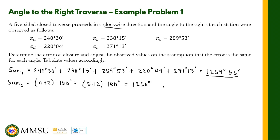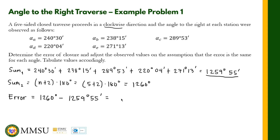As you can see, Sum 1 and Sum 2 are not the same, which means we have an error of closure. The error is the difference between Sum 1 and Sum 2. We compute: 1260 degrees minus 1259 degrees 55 minutes, giving a positive error of 0 degrees 05 minutes. This error of closure is equally distributed among the five observed angles, based on the assumption that the error is the same for each angle.